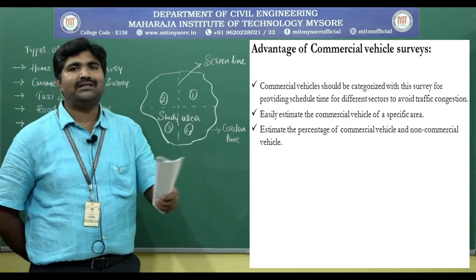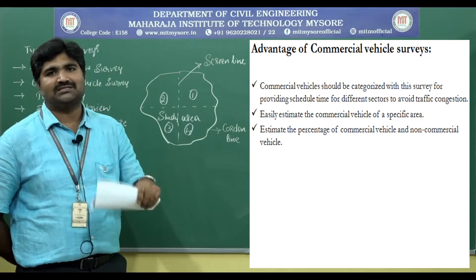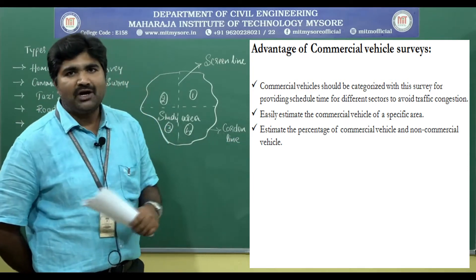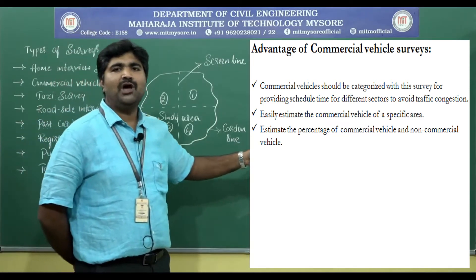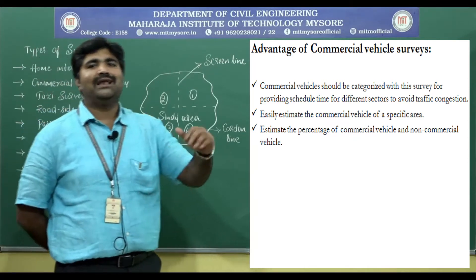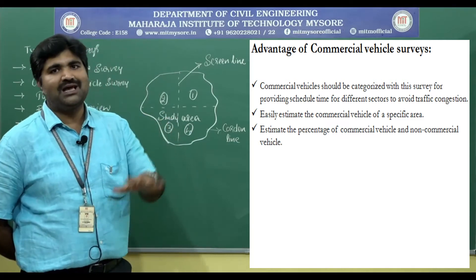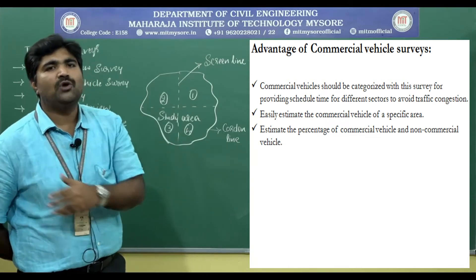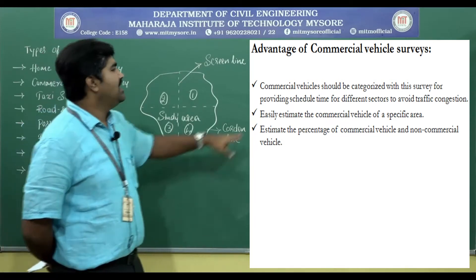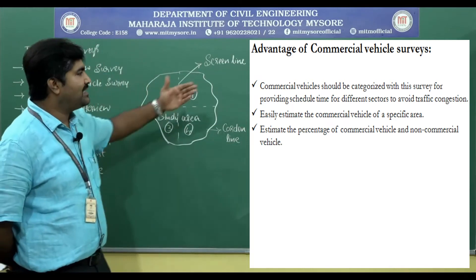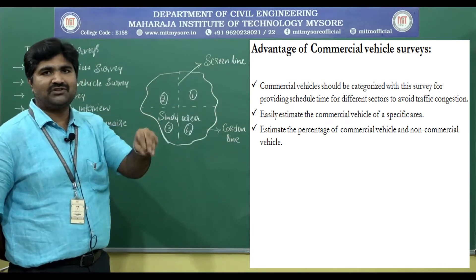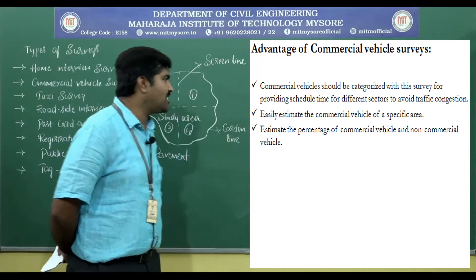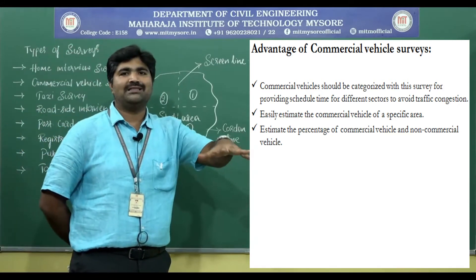During peak hours, commercial vehicles are not allowed in the central business district where commercial activities take place. During daytime the entry of commercial vehicles will be avoided as far as possible. During late evening or early morning, commercial vehicles will be operated — it doesn't cause congestion. Late evening or early morning time is suitable for loading and unloading operations, which occupy parking space. Since commercial vehicles are very big and occupy more space, we have to operate them in late evening or early morning. By conducting this survey we can easily estimate the percentage of commercial vehicles operating in a specific area.